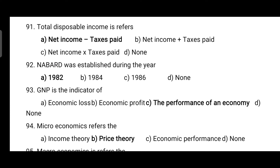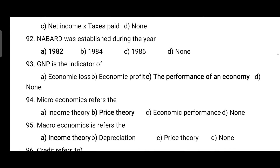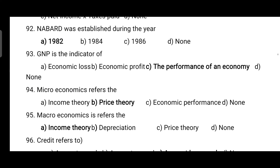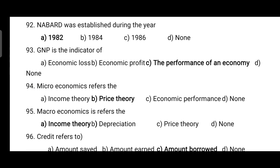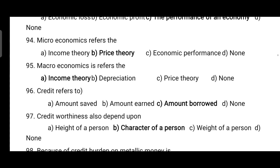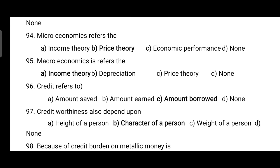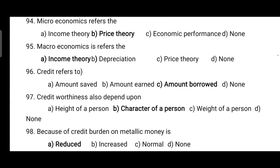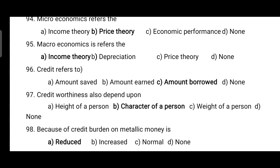The mathematical relationship between total consumption expenditure and its determinants is the consumption function. Total disposable income refers to net income minus taxes. NABARD was established in 1982. GNP is the indicator of performance of an economy. Microeconomics refers to price theory, and macroeconomics refers to income theory.